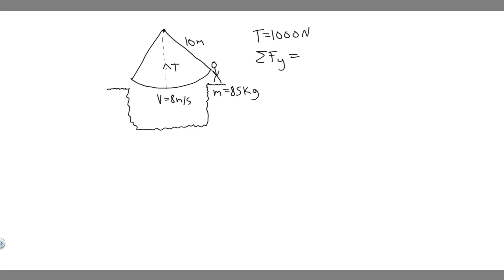In this problem, an adventurous archaeologist whose mass is 85 kilograms tries to cross a river by swinging from a vine. The vine is 10 meters long and his speed at the bottom of the swing is 8 meters per second. The archaeologist doesn't know that the vine has a breaking strength of 1000 newtons. Does he make it across the river without falling in?